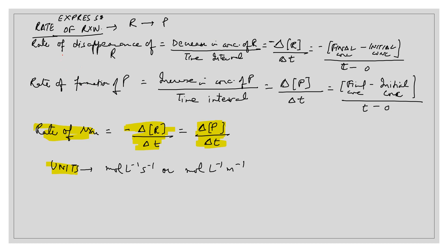Now, how to express the rate of reaction? For example, if R is a reactant changing into P, a product, we can express the rate with respect to reactants or with respect to products. Initially there are only reactants and no products. The rate of disappearance of R — how fast the reactant is consumed — is equal to the decrease in concentration of R in a given time interval.